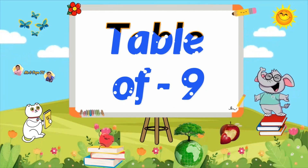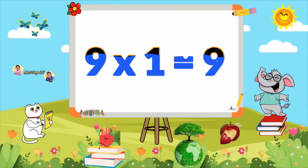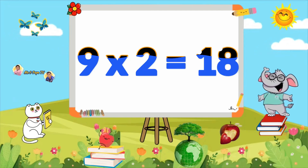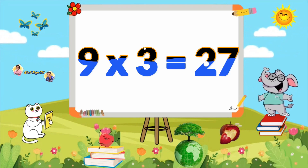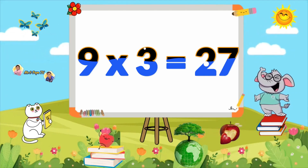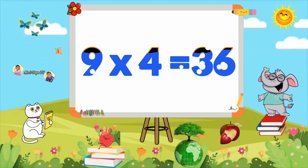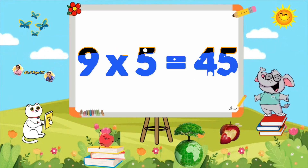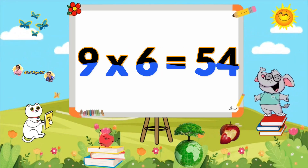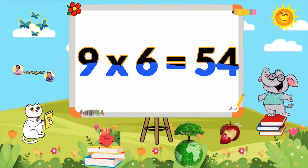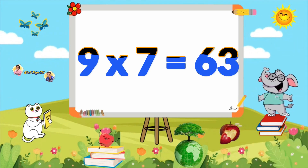Learn Table of 9. 9×1=9, 9×2=18, 9×3=27, 9×4=36, 9×5=45, 9×6=54, 9×7=63.